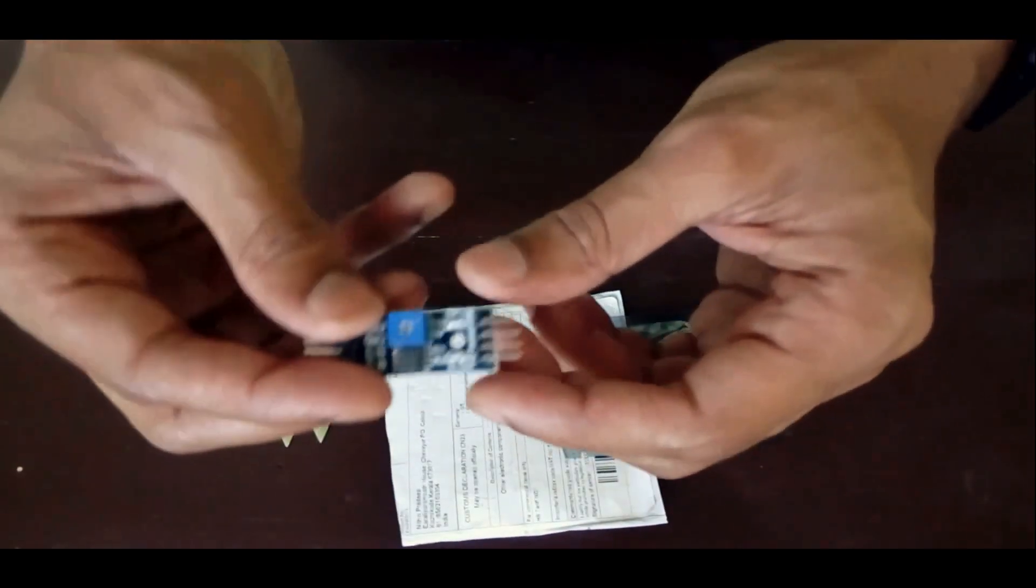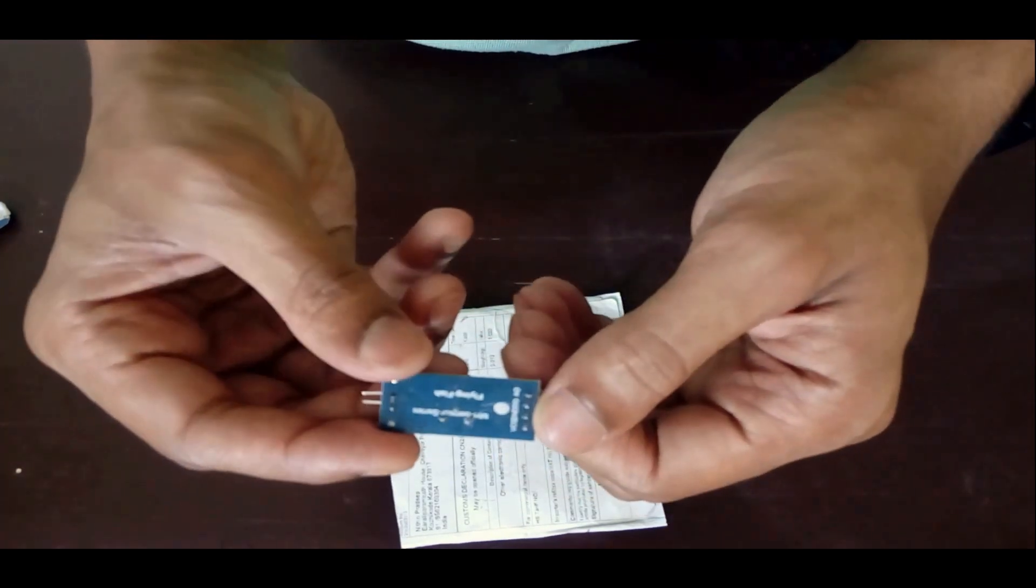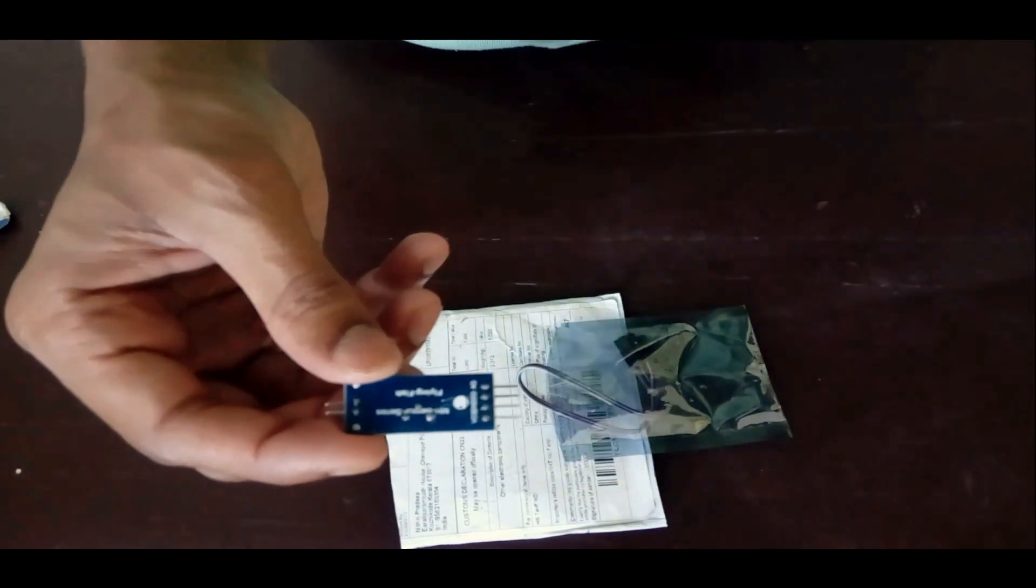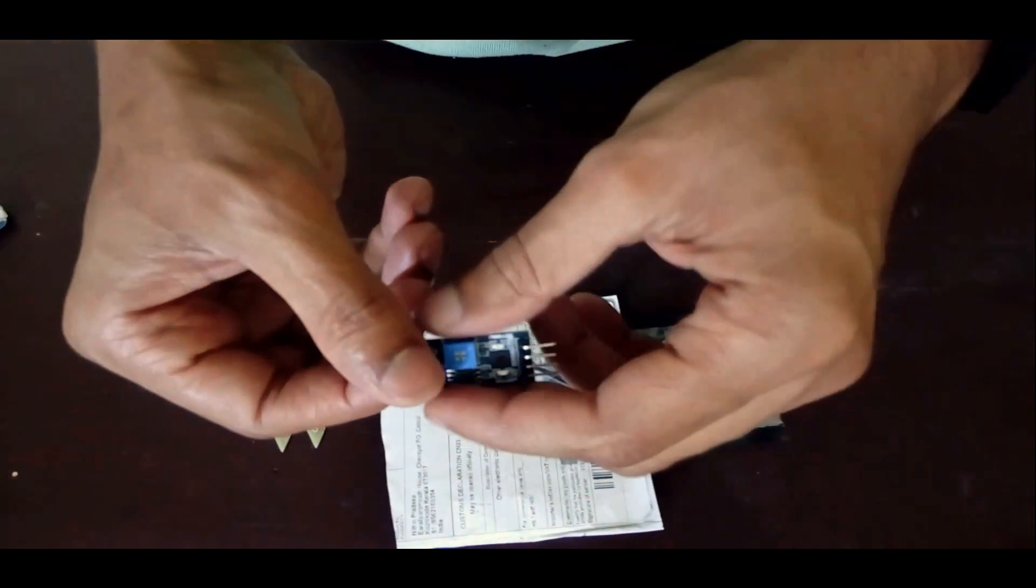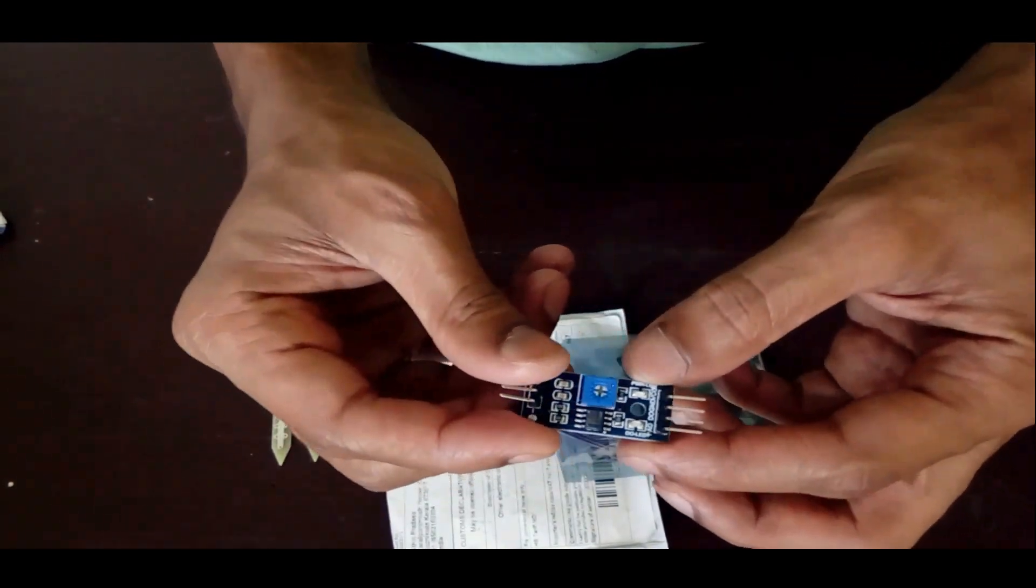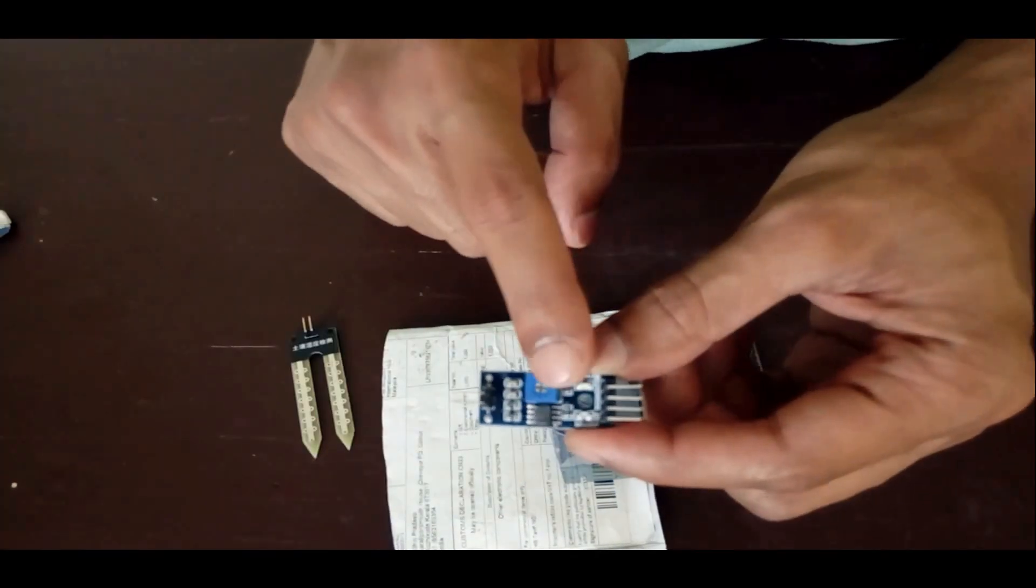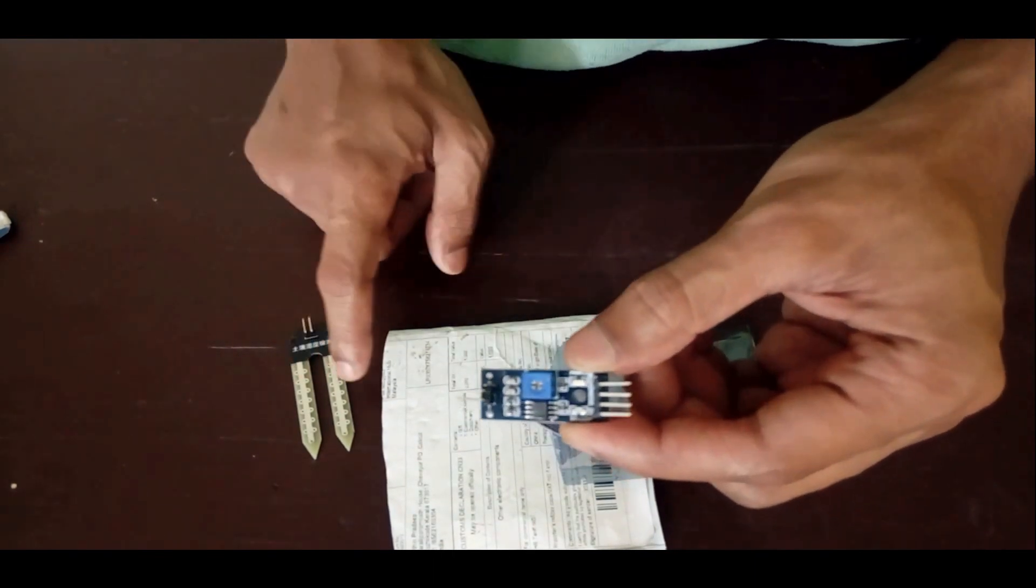Now, let me take the second thing out. This is the module for the probe. This acts as an interface between the probe and the microcontroller board we are going to connect this to. It has got an ADC over here and a potentiometer. This is used to adjust the sensitivity of the probe.